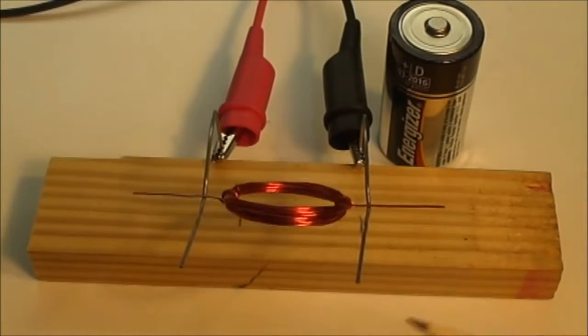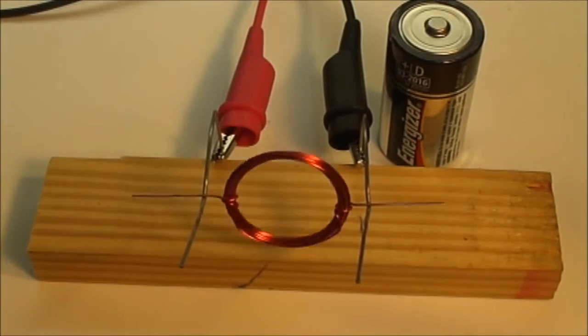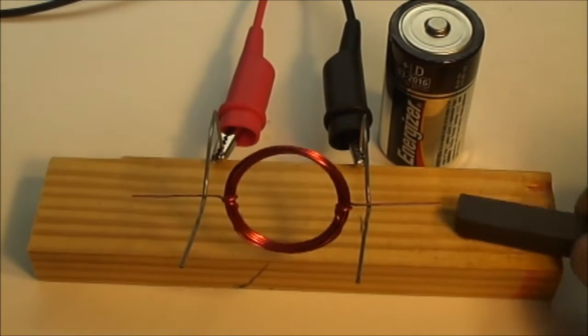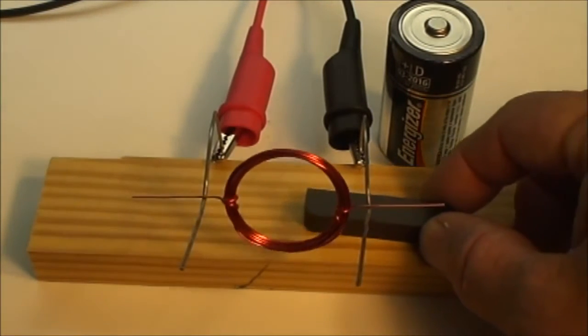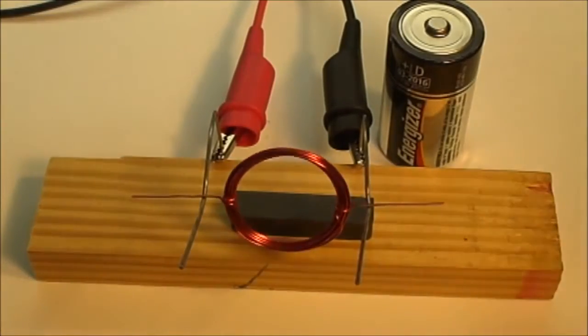So what's happening is the coil is generating a magnetic field and it has a north and south pole just like normal magnets do. When we put this magnet in place, the opposites are going to repel, and like are going to attract.